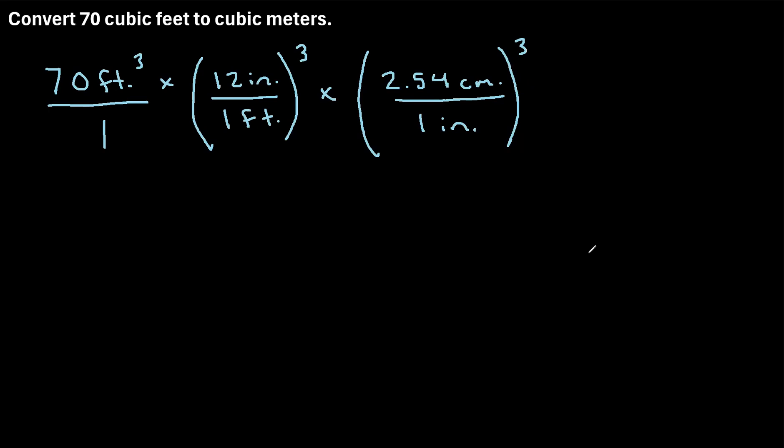Now the last step is we want to convert these cubic centimeters to cubic meters. So there are 100 centimeters in a meter. So what we can say is we can multiply this by, for every 1 meter, we have 100 centimeters. And again, this will be cubed.